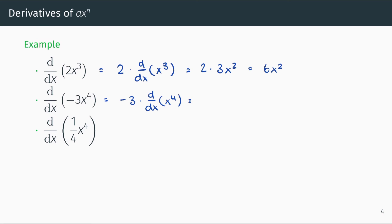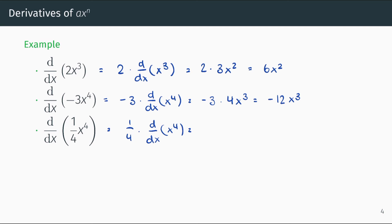The derivative of x to the power of 4 is 4x cubed, so this simplifies to negative 12x cubed. And for our final example, the derivative of one quarter times x to the power of 4 is one quarter times the derivative of x to the power of 4, which is 4x cubed. So our answer is one quarter times 4x cubed, which simplifies to x cubed.